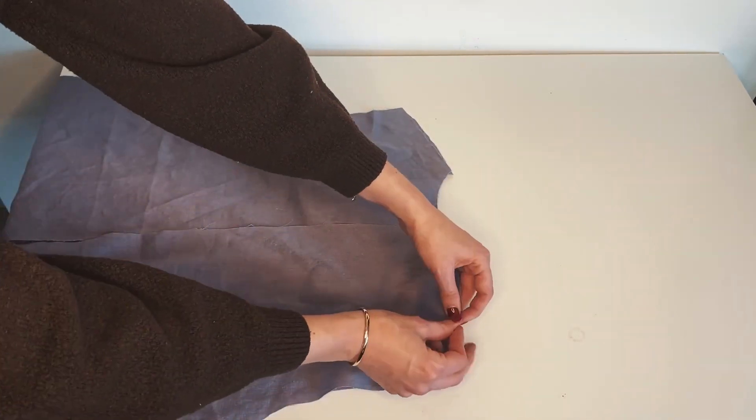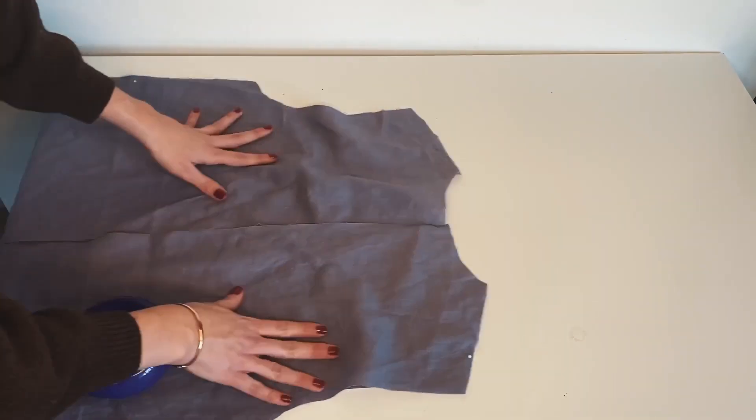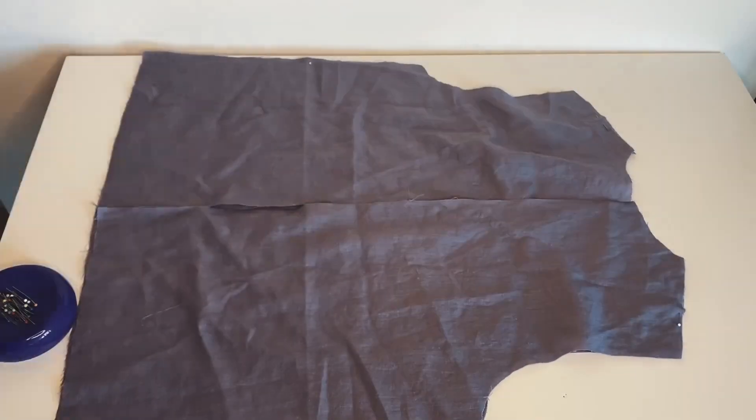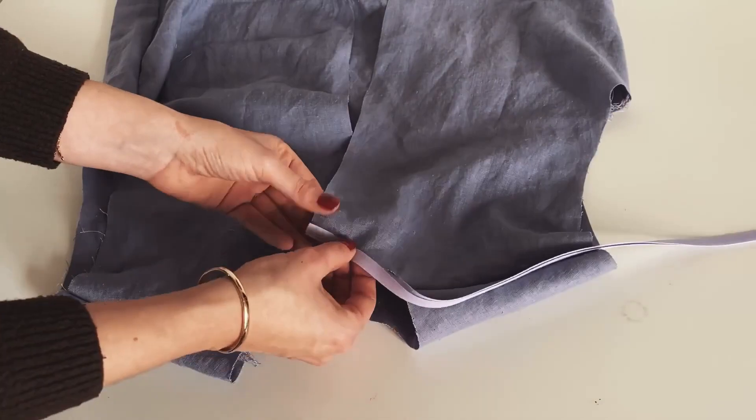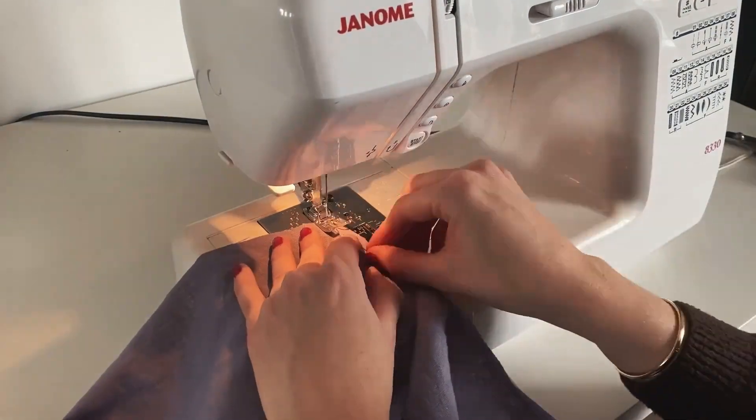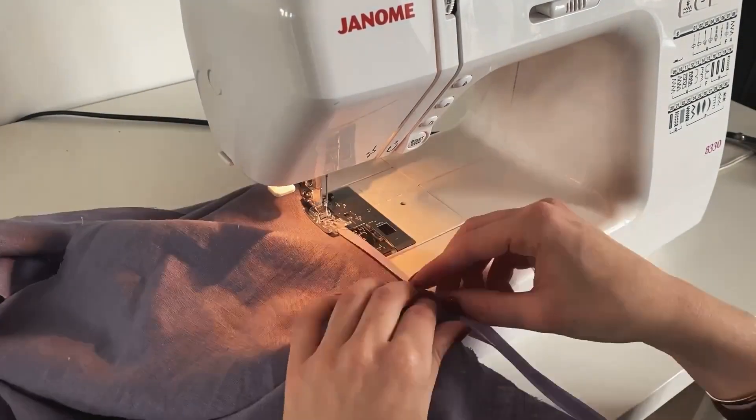If you're not familiar with how to sew stitches, check out course 1 and 2 for more details. Finish the neckline with bias tape. If you're unfamiliar with the use of bias tape, check out course 2.